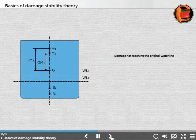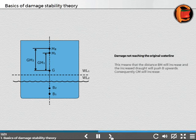This means that the distance BM will increase, and the increased draft will push B upwards. Consequently, GM will increase.